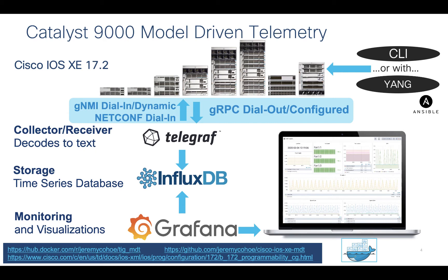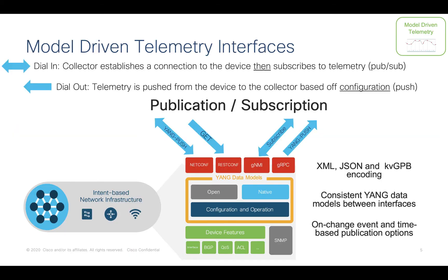Now, this solution is packaged up into a Docker container on Docker Hub, as well as all of the code samples that you see — they're all listed on the GitHub page. I've mentioned NetConf, GNMI and gRPC. These are the model-driven telemetry interfaces that are available within iOS XE. And there's a couple of differences between them, specifically dial-in and dial-out. So with dial-in, that's when our tooling is going to create a session similar to SSH. And then once that session is open, it's going to subscribe to the telemetry. Comparing that to dial-out — with dial-out, we're going to be pushing the telemetry from the device to a collector that's going to be listening.